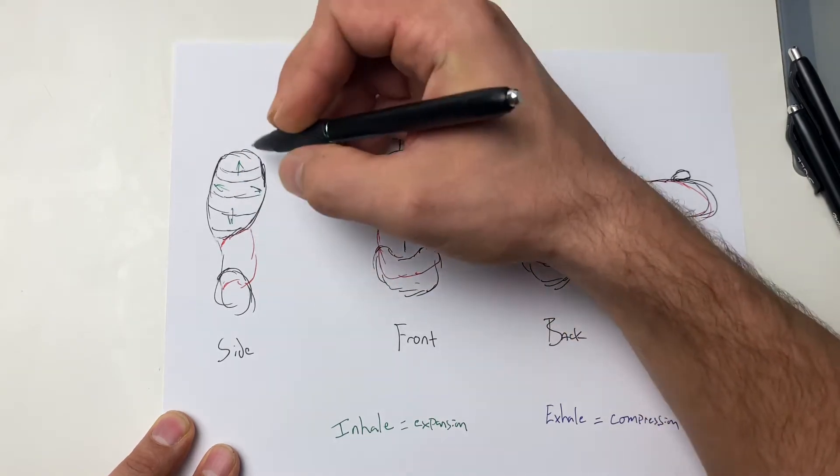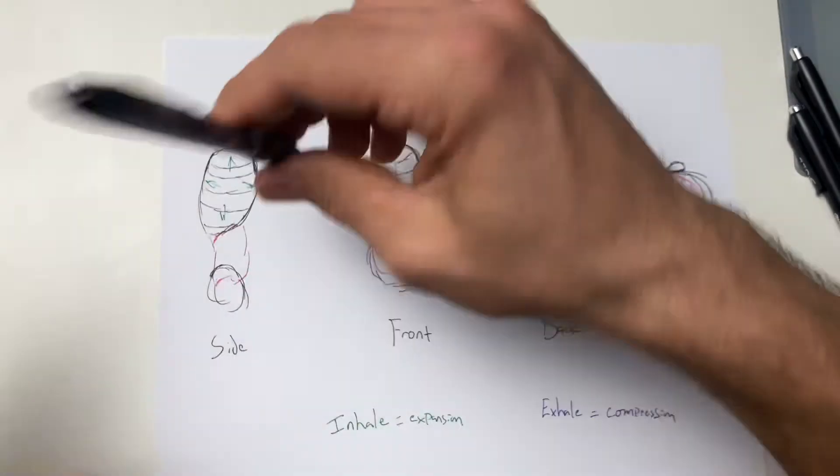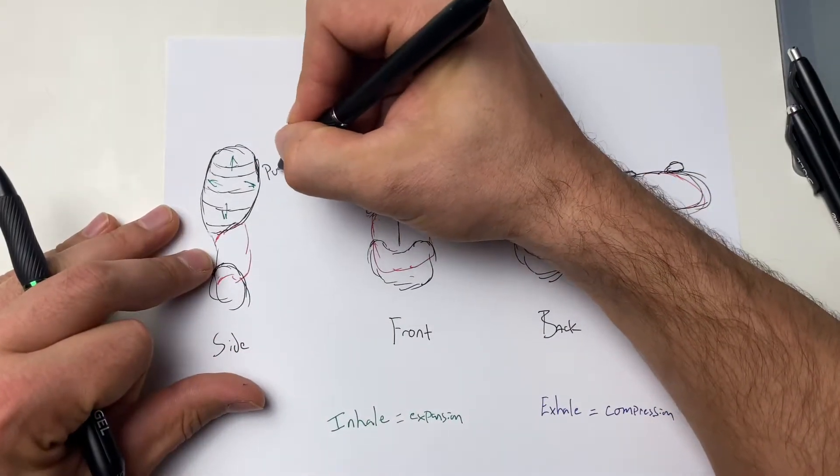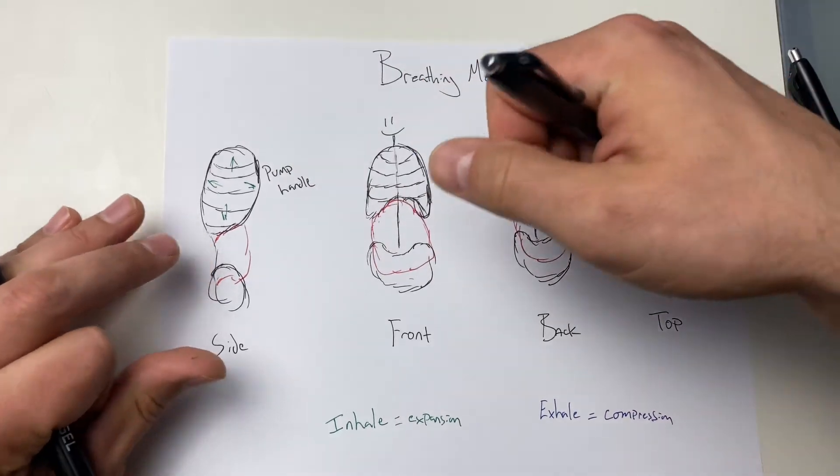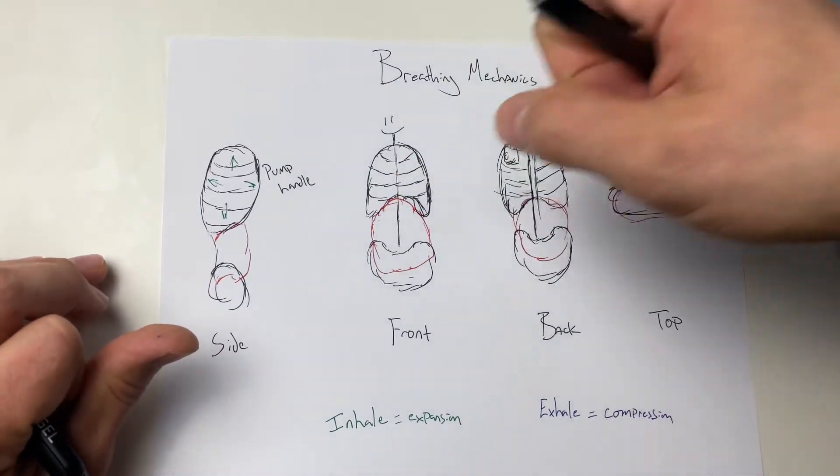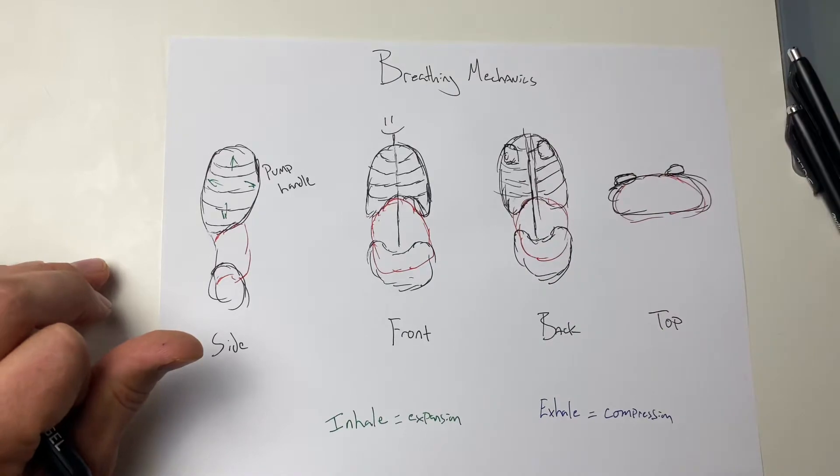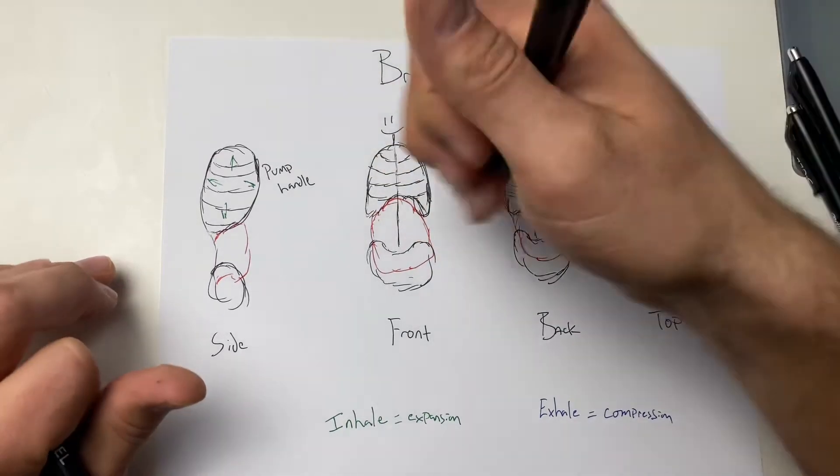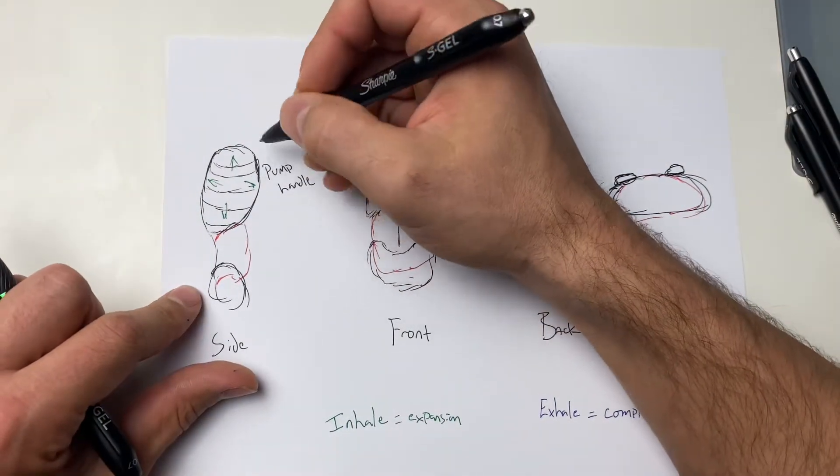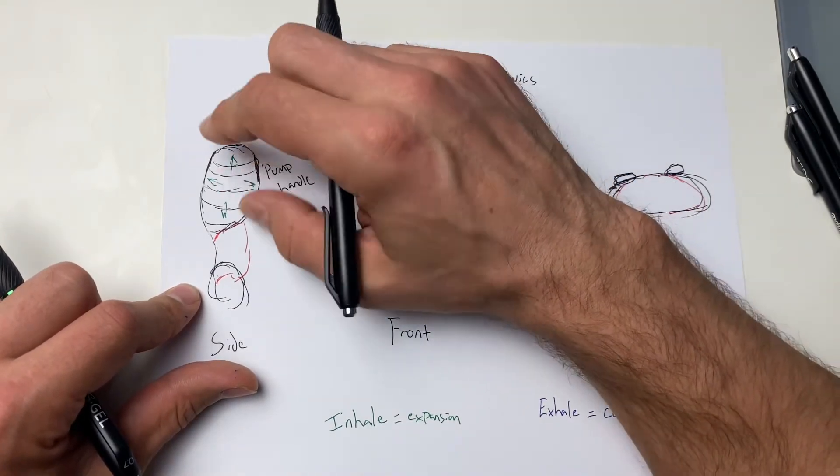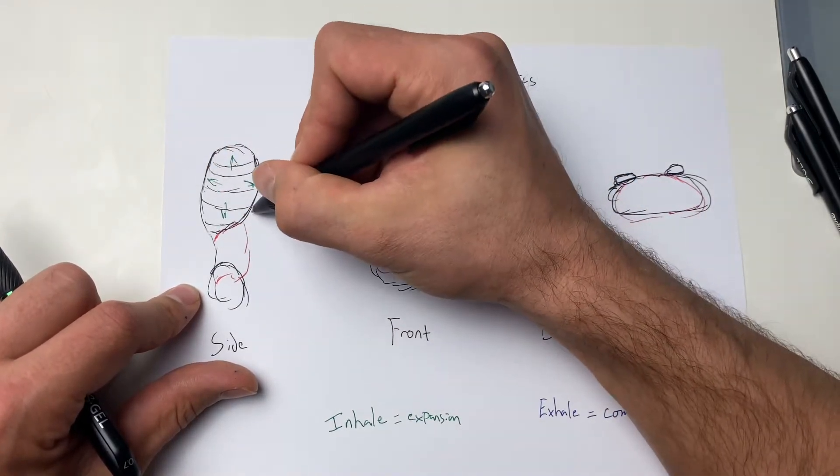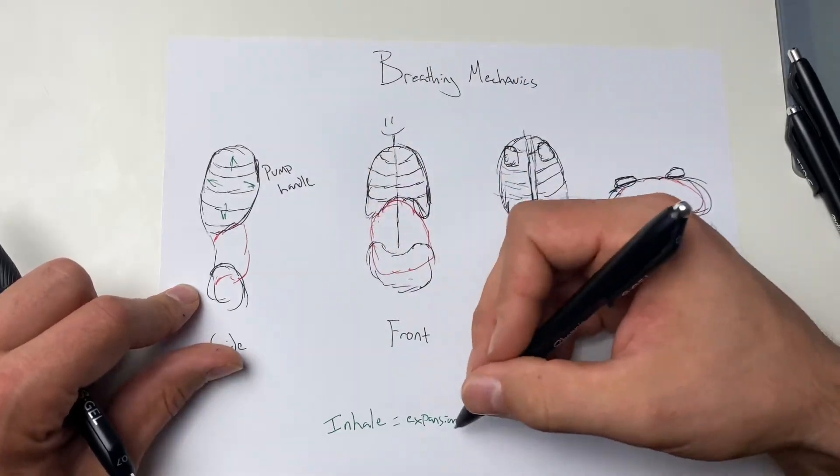So the action of the front part of the ribcage is called a pump handle. If you think like an old school pump coming from a well, you just would lift it up and then you would push it down. So when we take a deep breath, we should see a pump handle action of the front part of the ribcage as this expands here on the inhale.